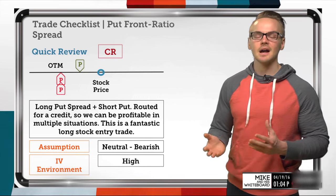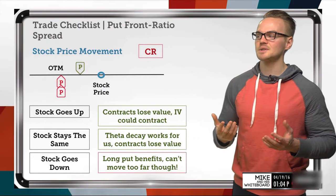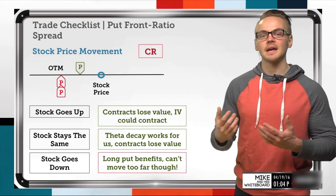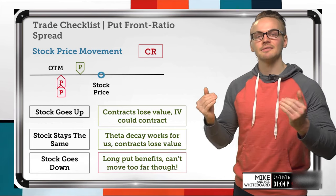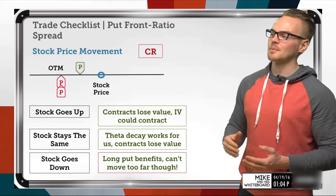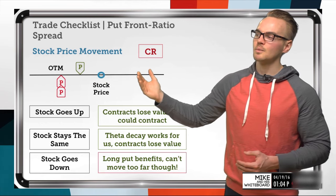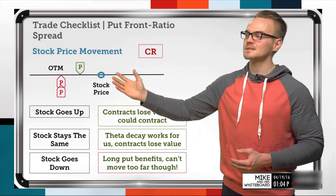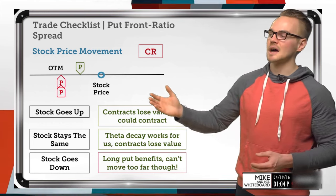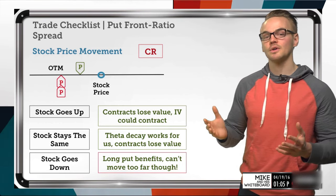If the stock goes up, these contracts will lose value and we could see implied volatility contract. There's a relationship where if the market goes up, IV usually comes down, and if the market goes down, IV usually goes up. When the stock goes up, contracts lose value because they're moving further out of the money. The further the stock price is from our short strikes, the lower the option values, which could allow us to buy back the spread for less or have those options expire worthless — that's great for us.